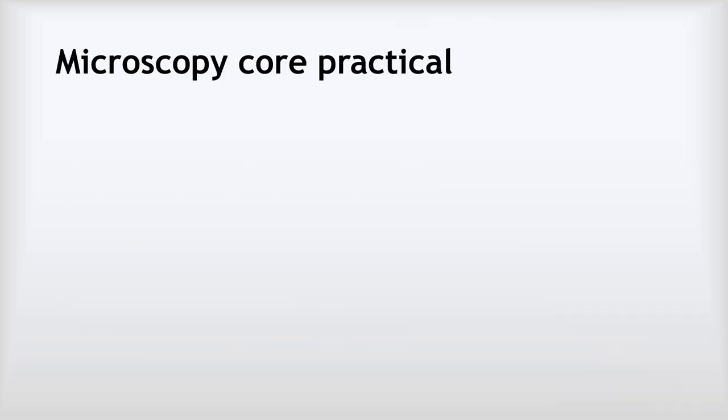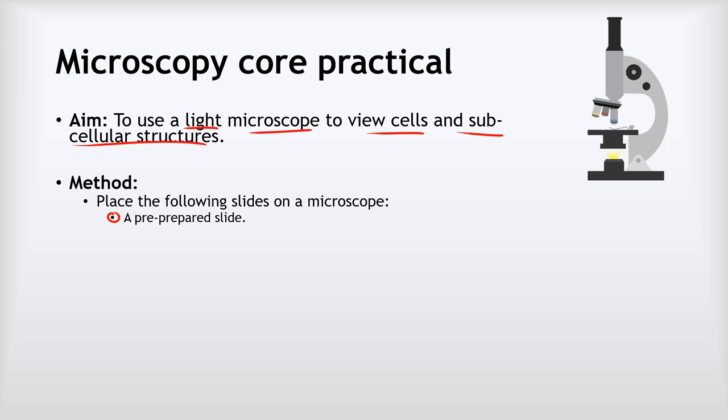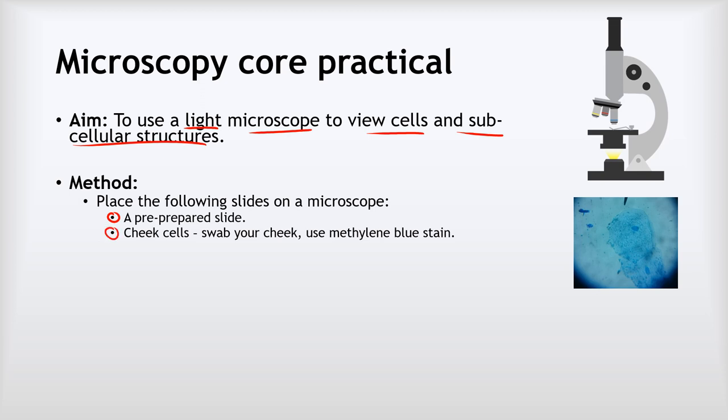So this leads us on to the idea of the microscopy core practical. In this core practical what we were doing was using a light microscope to view cells and subcellular structures for a range of different samples. Now our method, the first thing we did was we put each of these different slides onto the microscope stage. The first one was a pre-prepared slide of just some cells that were given to you by your teacher. Then we would have looked at a slide made from some cheek cells. So what we did was rub a cotton wool bud around the inside of our cheek, or a q-tip if you're watching this from the states, and then we added some stain to that.